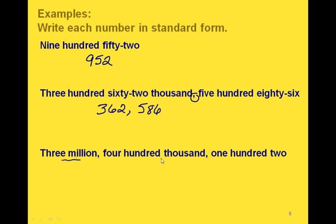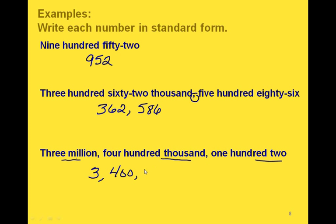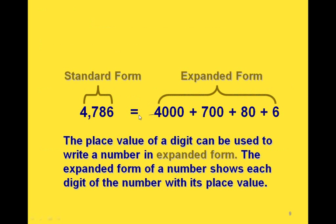For this one, we actually have three different periods represented. We have the millions, the thousands, and the hundreds. So we would start out with the number in our first period — millions — which is just a 3. Then we put a comma. Then we have 400 in the thousands period, so we write 400 and then another comma. Then we have 102 in our hundreds period.